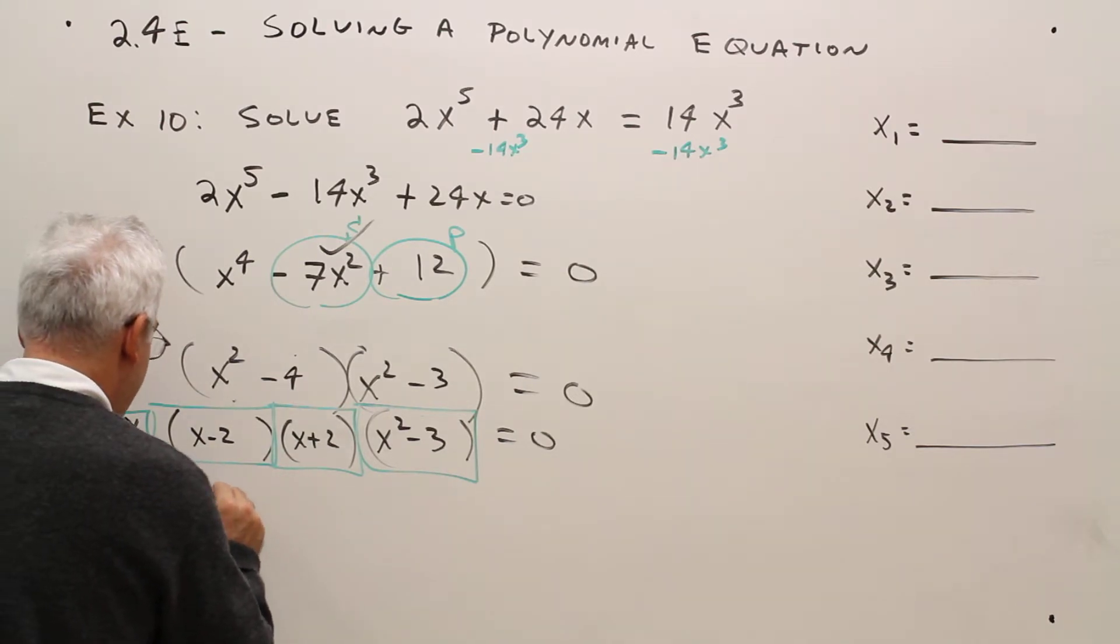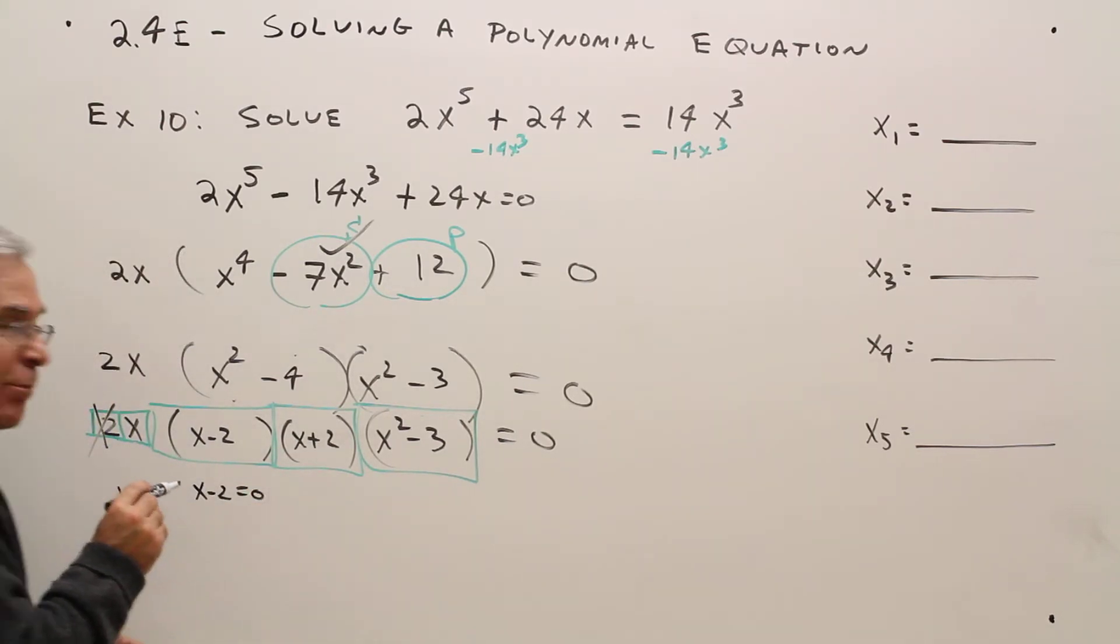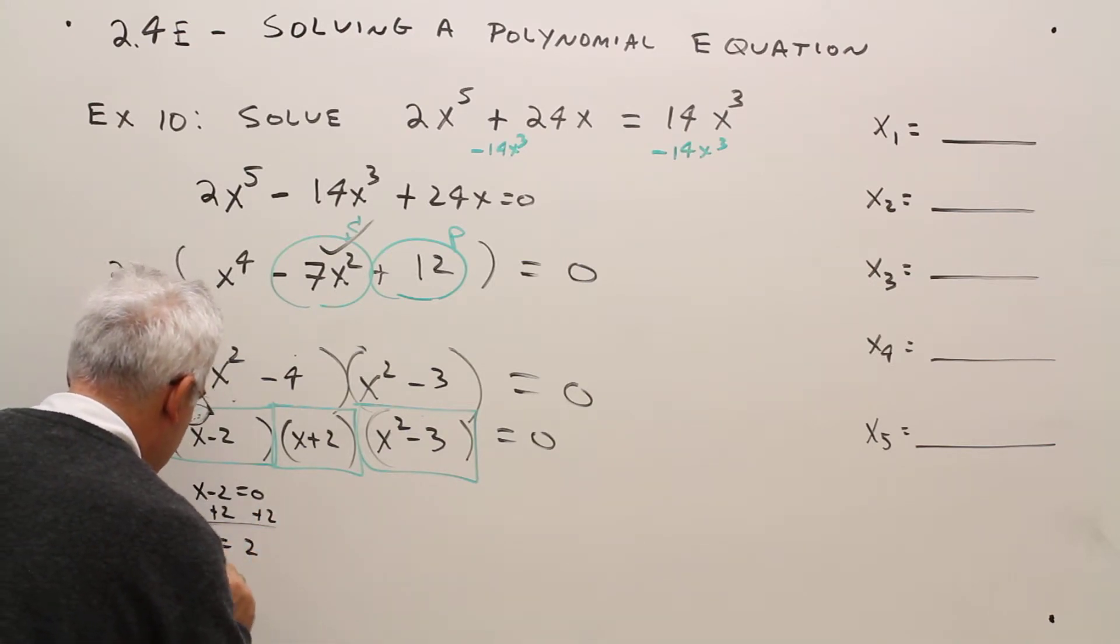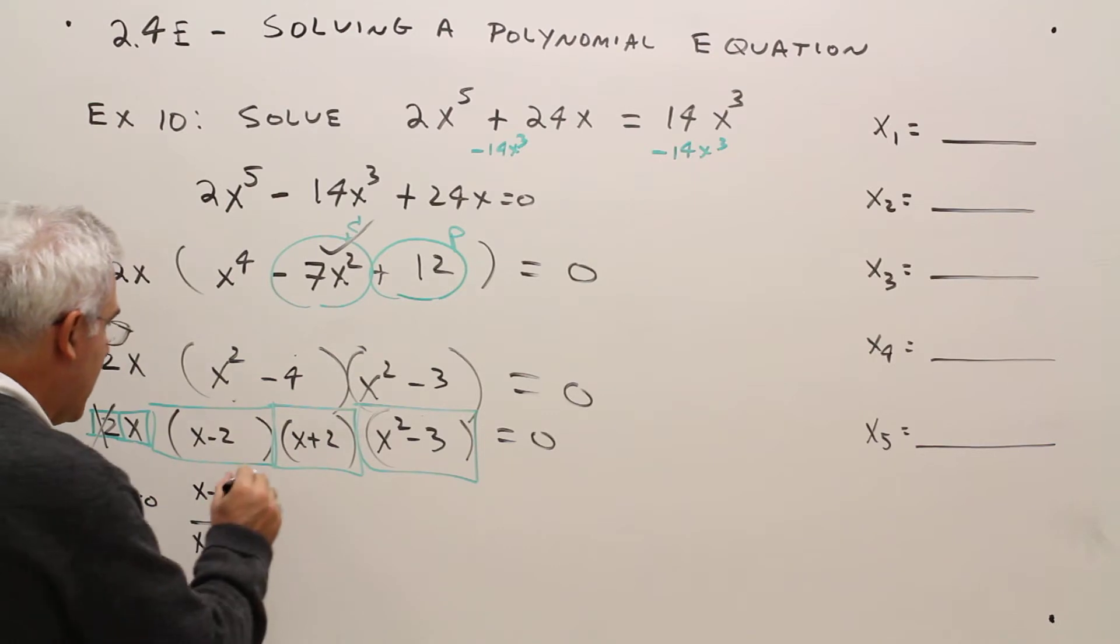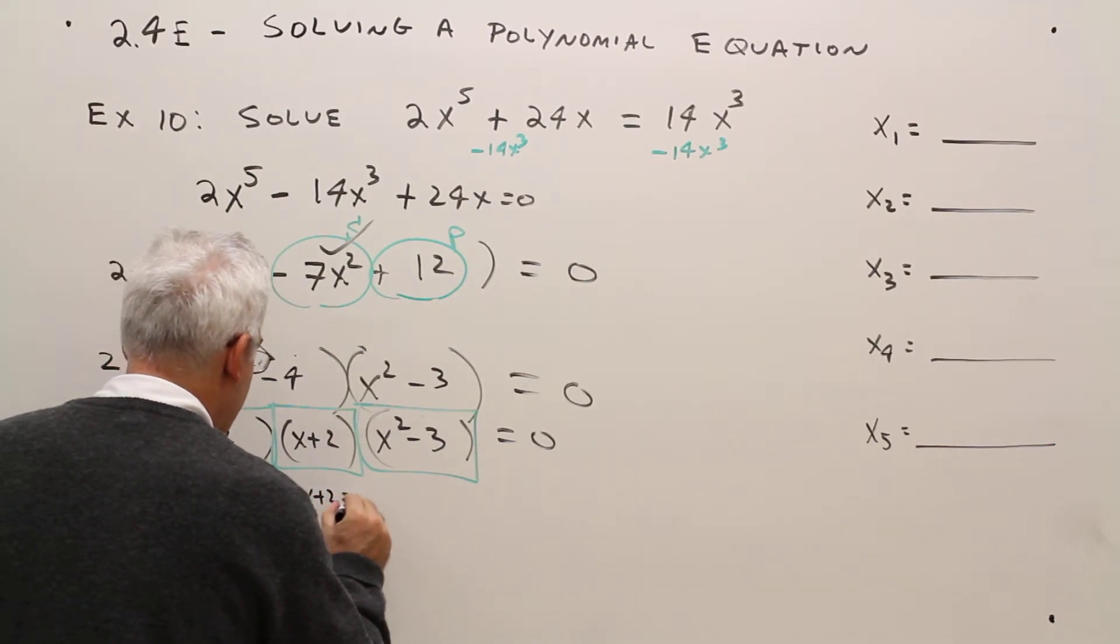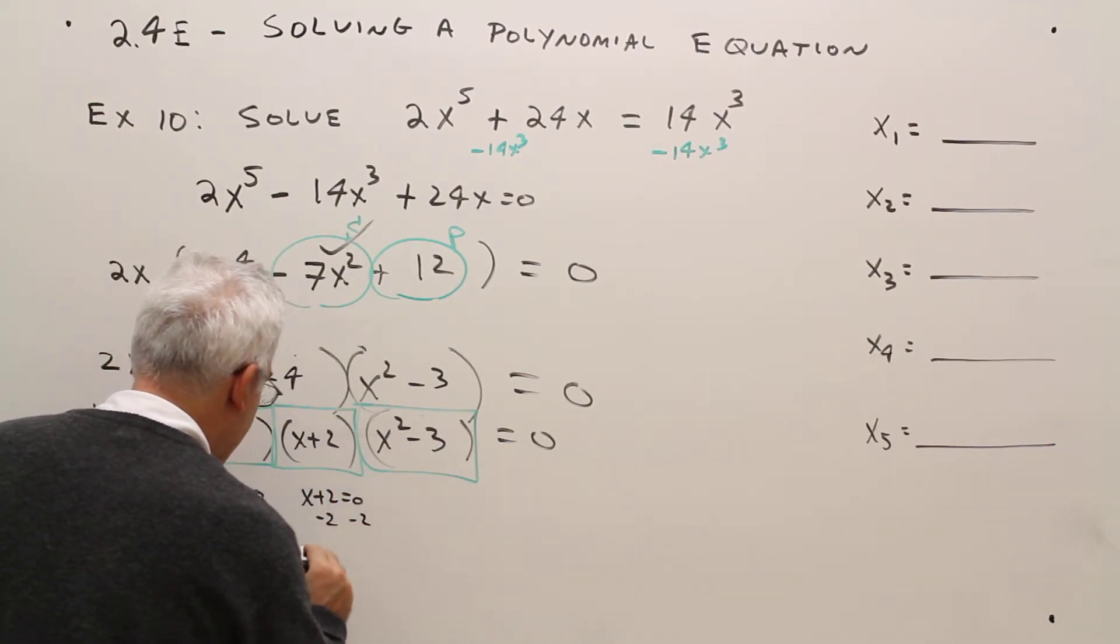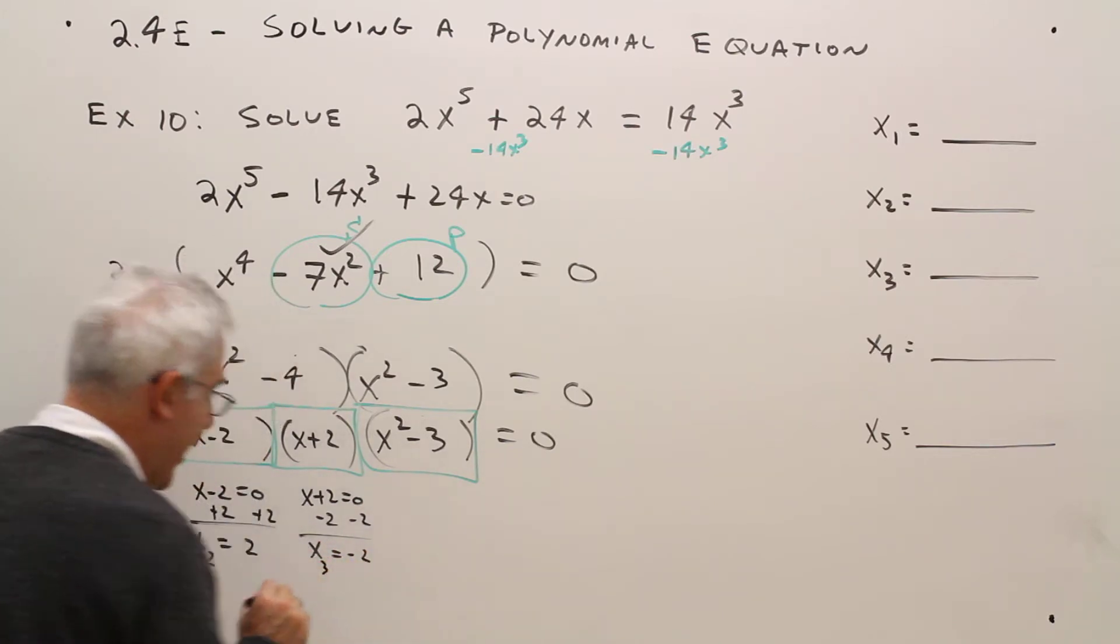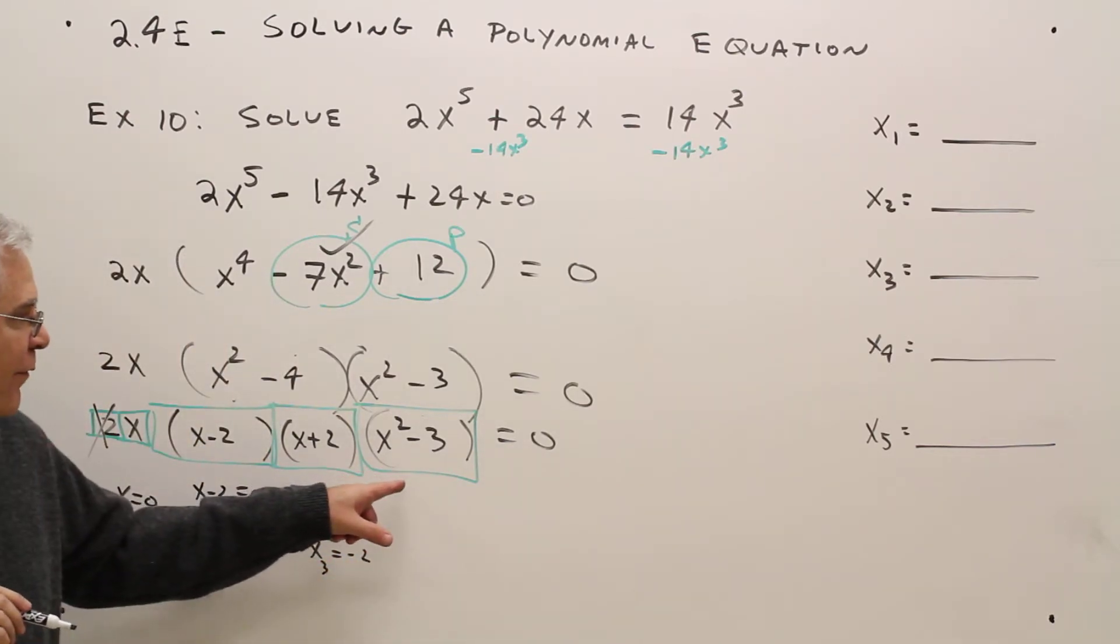Okay, so x minus 2 equals zero, just plus 2 to each side. So x equals 2. I'll call that x sub 2. x plus 2 equals zero, minus 2, minus 2. x equals negative 2. I'll call that x sub 3.